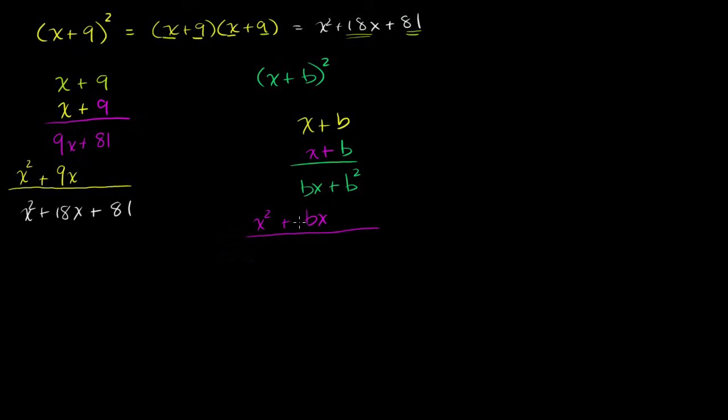So when you add everything, you're left with x squared plus 2bx plus b squared. So what you see is, the end product, what you have when you have x plus b squared, is x squared plus 2 times the product of x and b plus b squared. So given that pattern, let's do a bunch more of these.